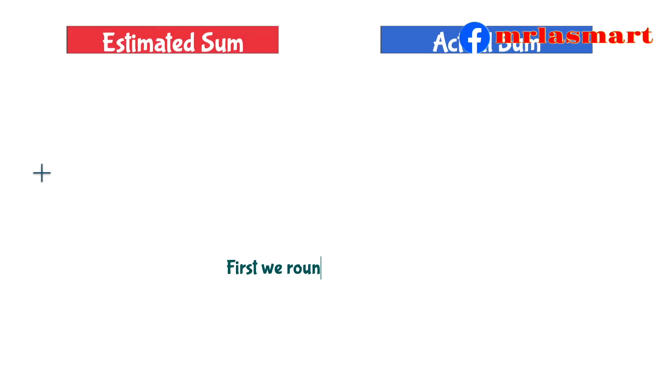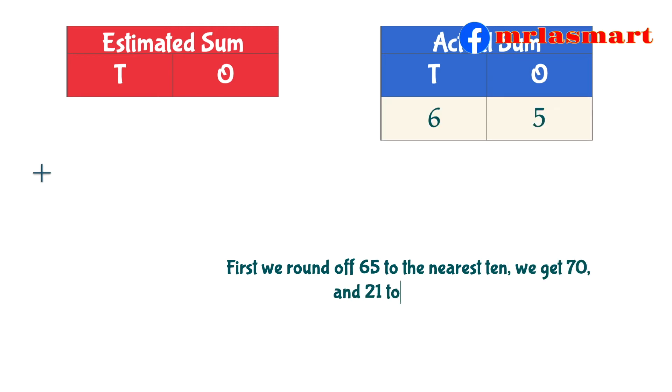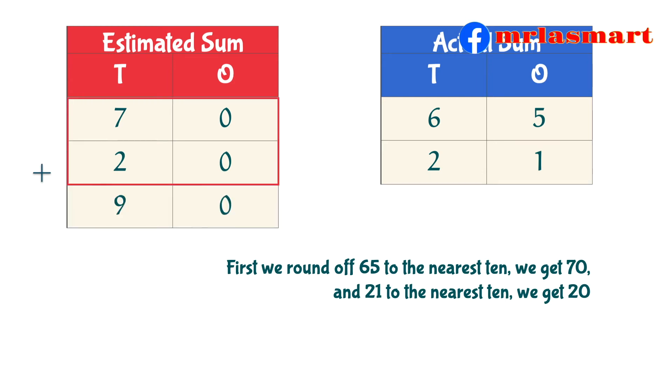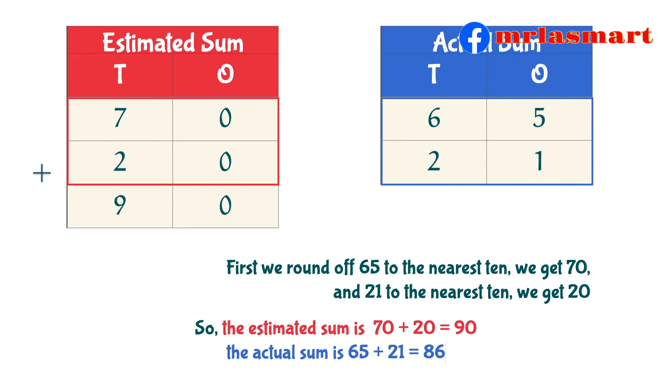First we round off 65 to the nearest 10, we get 70, and 21 to the nearest 10, we get 20. So, the estimated sum is 70 plus 20 equals 90. The actual sum is 65 plus 21 equals 86.